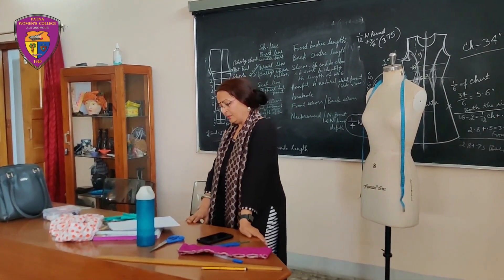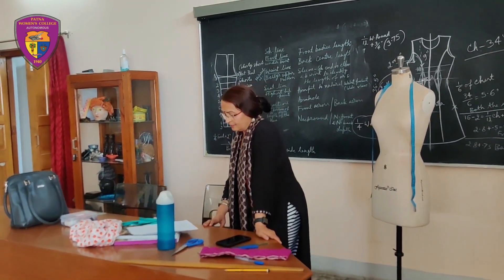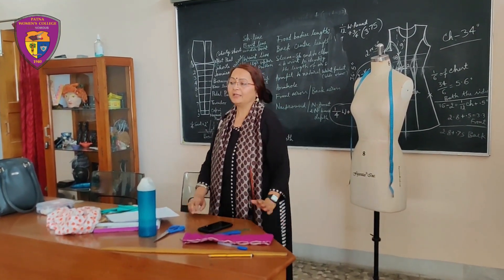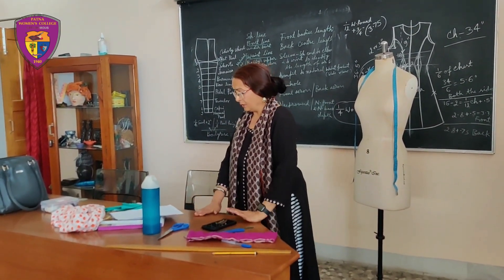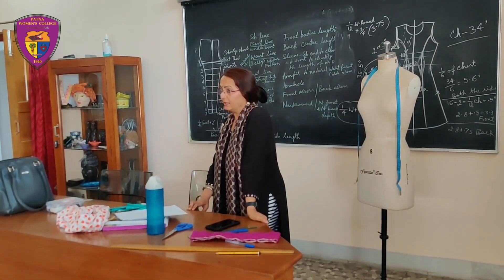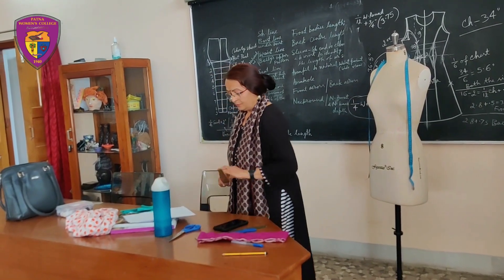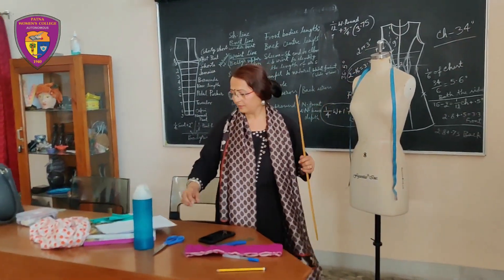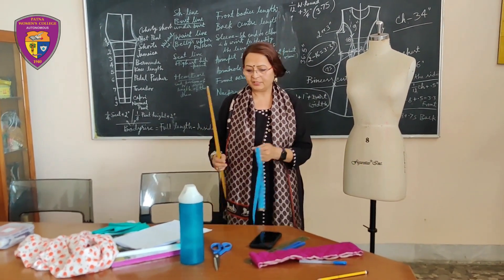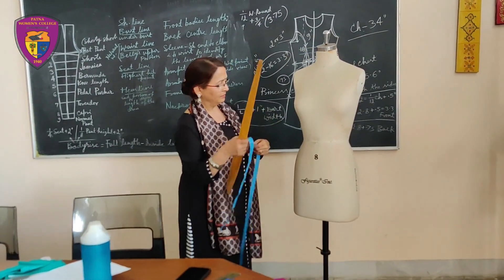Taking body measurement plays a very important role in garment stitching. To get a well-fitted dress it is very important to take measurement correctly. There are two types of measurement: vertical and horizontal. Vertical measurement means length.